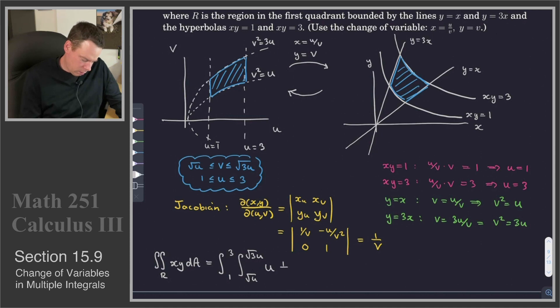x times y is just u. And then our Jacobian, the absolute value of it, 1 over v, but v has positive values. So, it's just 1 over v. And then that was times dv du.